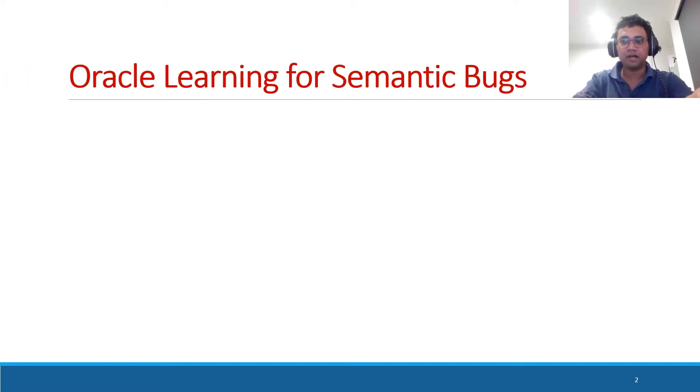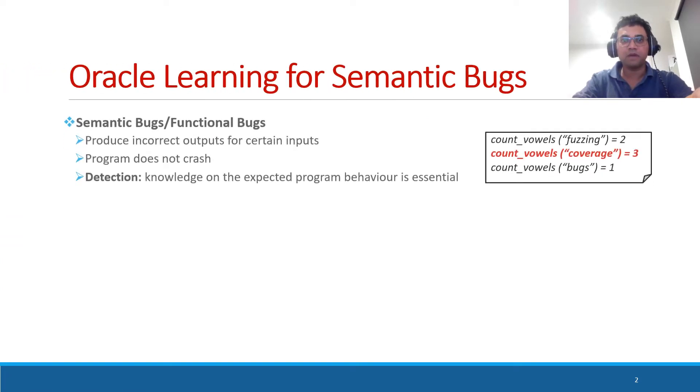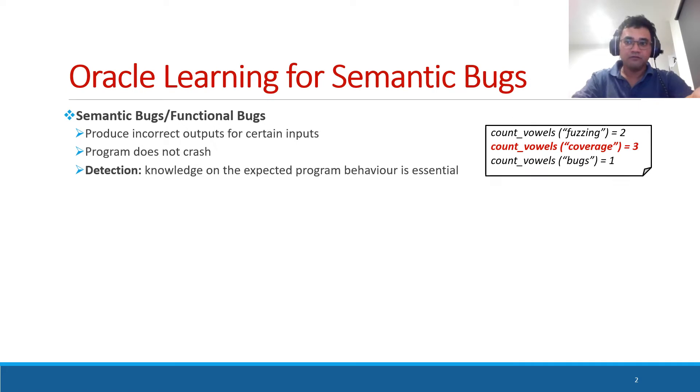Oracle Learning for Semantic Bugs. A semantic bug or functional bug exists when the program produces incorrect outputs for certain inputs. As an example, consider this count_vowels function. Its intended functionality is to count the vowels of a given string. You can see that the vowel count for coverage given by this program is wrong. In other cases, it behaves no better.